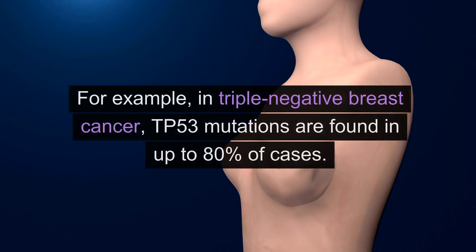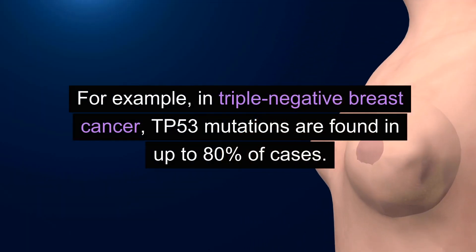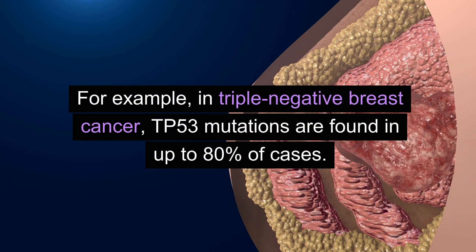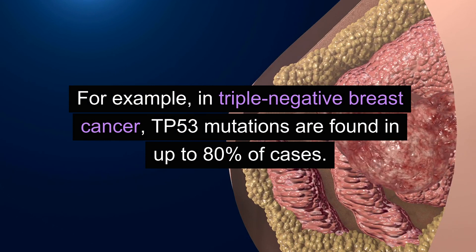For example, in triple-negative breast cancer, TP53 mutations are found in up to 80% of cases.